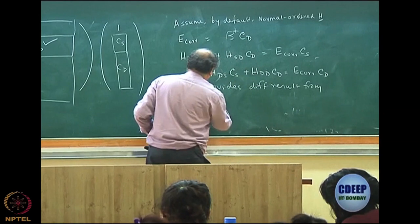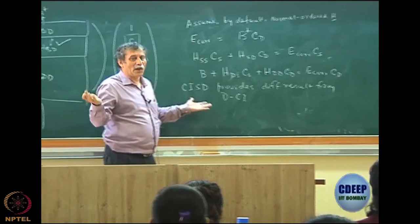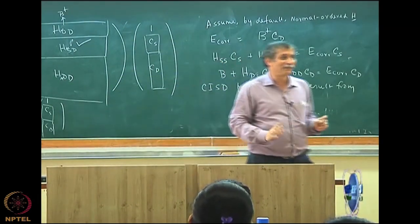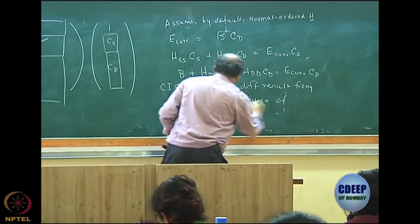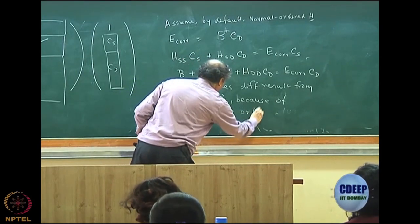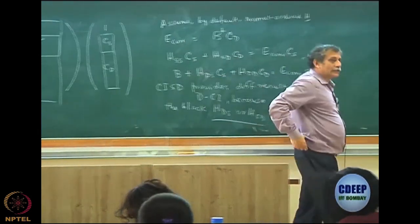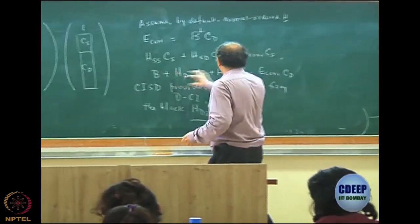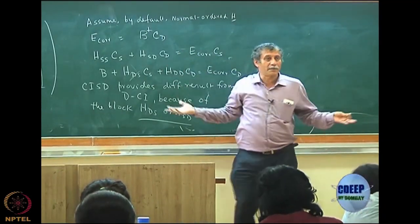In the literature you will find all kind of nomenclature: this is called CSD, this is called SDCI. So whatever nomenclature you want to use, no problem. So this provides different result from DCI because of the block HDS or HSD, that is identical. Again by default it is a normal order Hamiltonian. That is the reason CISD gives a different result. Because if this was 0, then of course your CD equation would have been also exactly identical, and correlation energy anyway does not depend on singles, so your result would have been exactly identical.